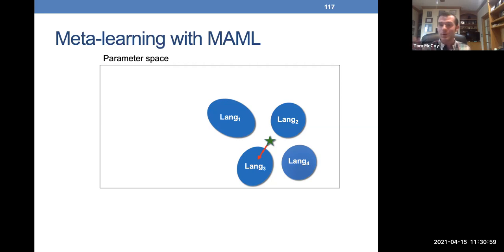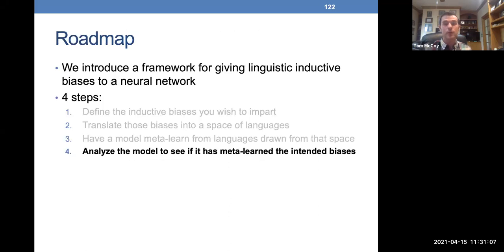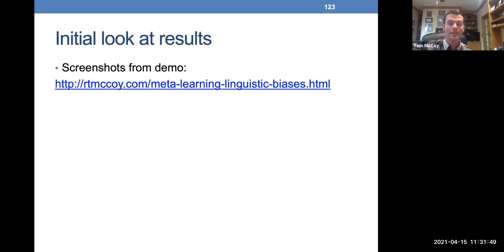Now we have two models: one whose initialization was determined by MAML, and a control model that was randomly initialized. MAML is usually presented as giving models few-shot learning abilities, whereas here we're trying to give specific inductive biases. If we've constructed our space of languages properly, few-shot learning should indicate correct inductive biases, but we can't be certain. So the final analysis step checks whether that's indeed the case. First, I'll demonstrate the few-shot learning abilities using screenshots from a demo.